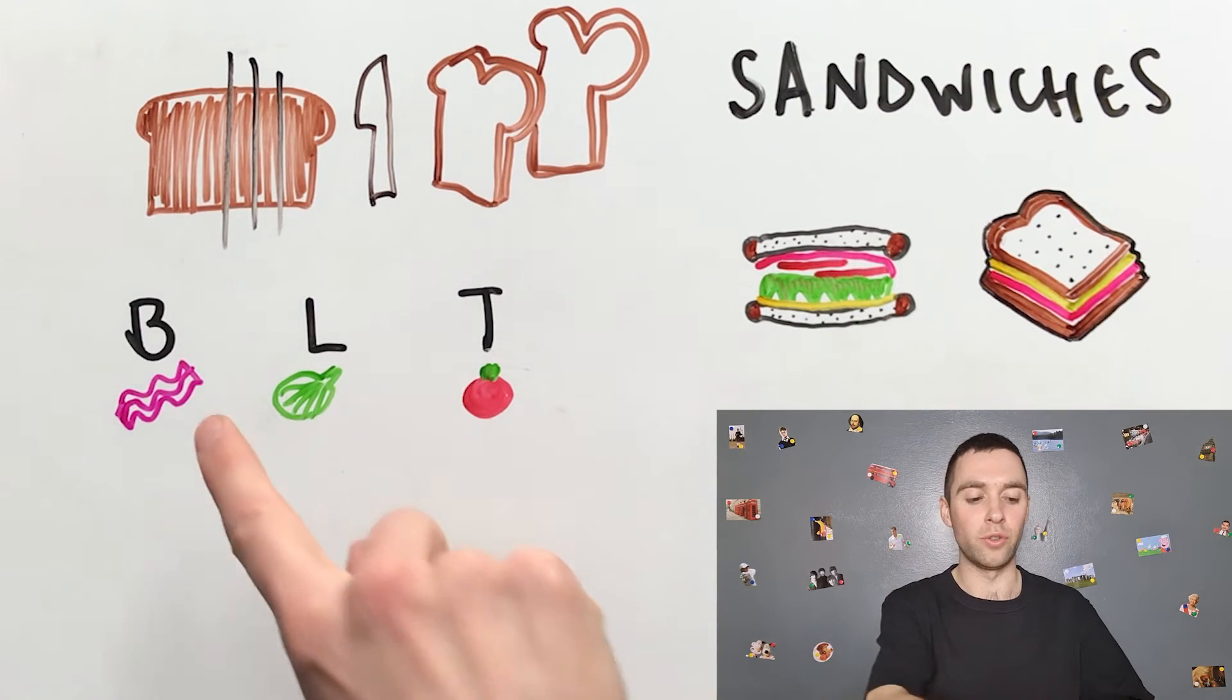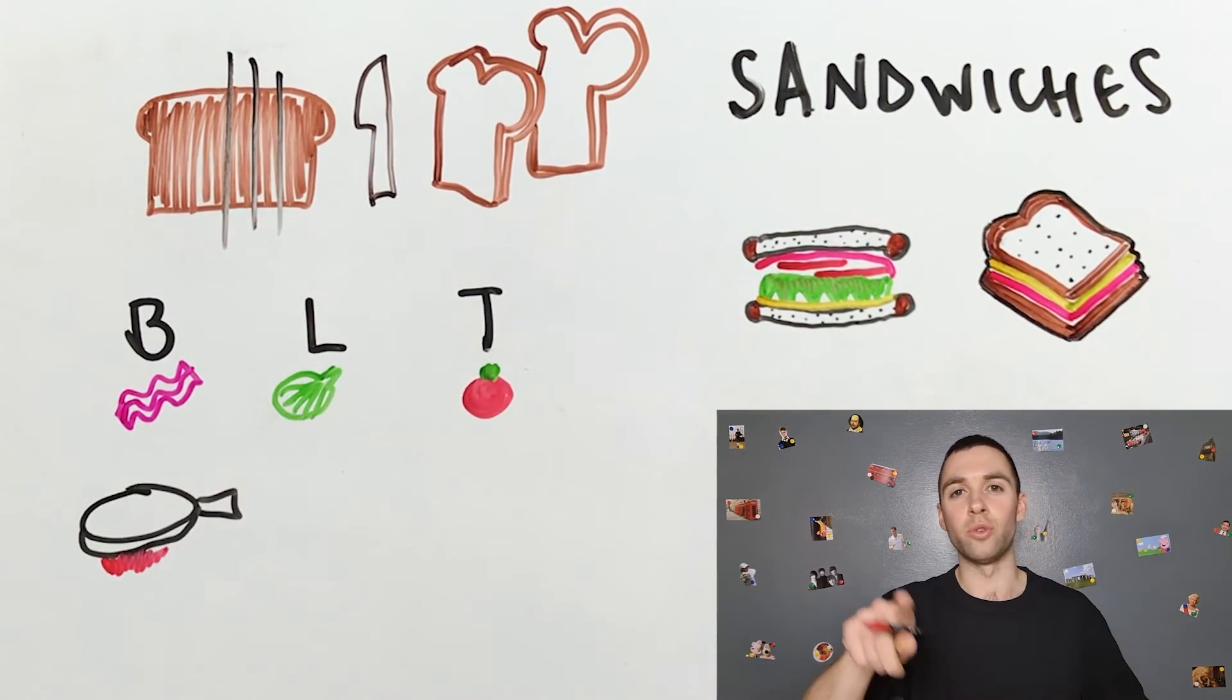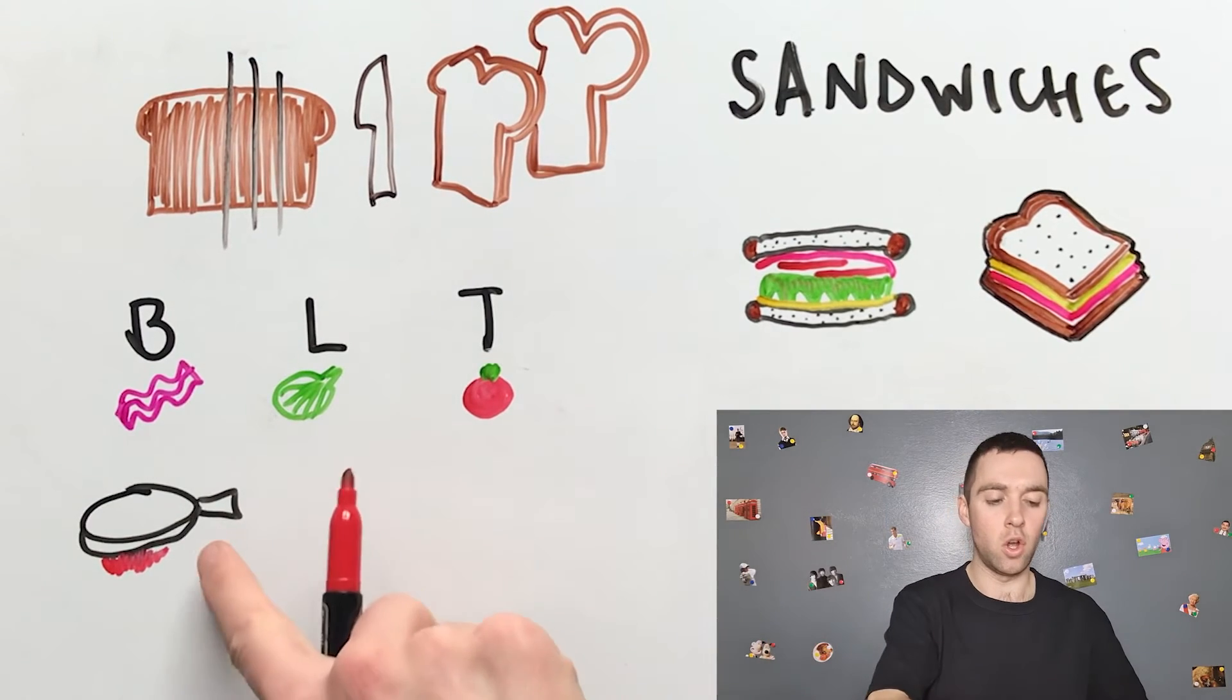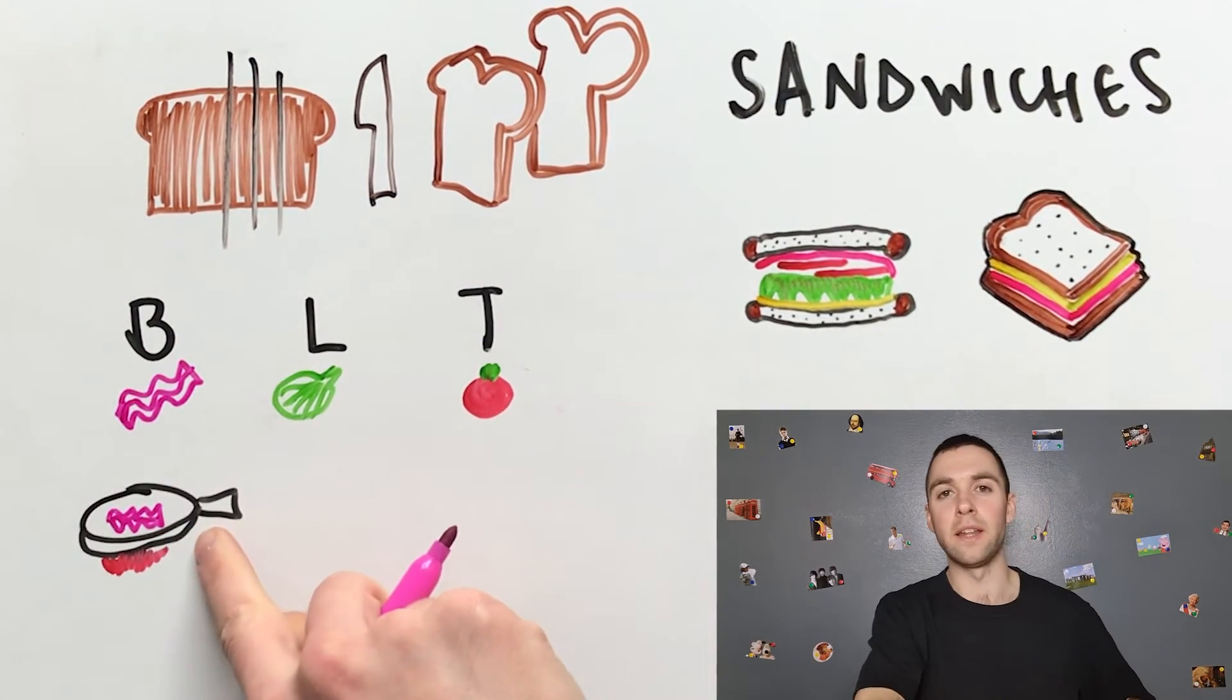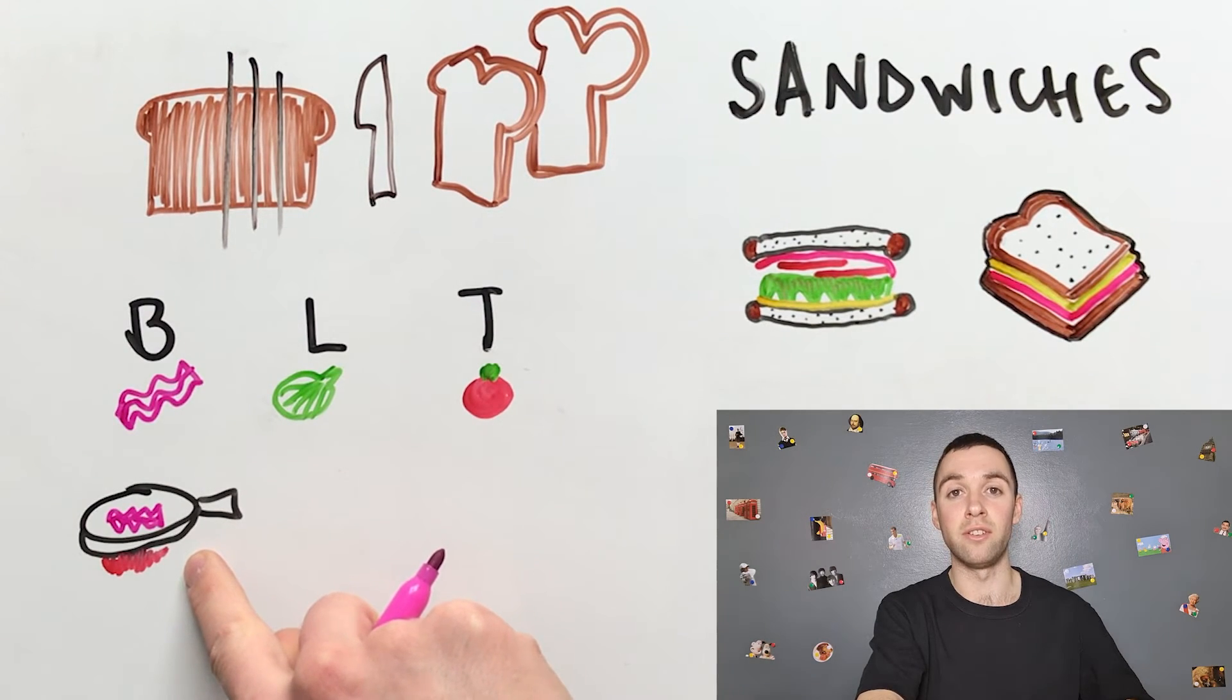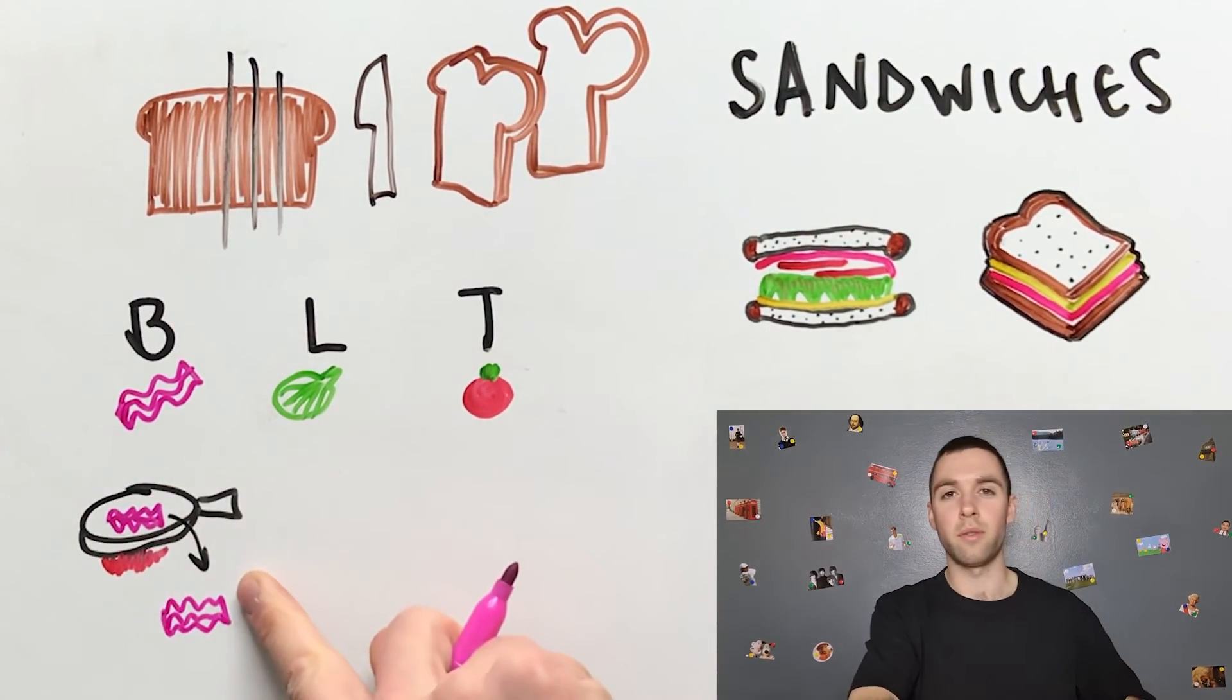First you need to cook or fry your bacon. So you need a really hot frying pan, and you put your bacon in like that, and it fries. It sizzles. When your bacon is ready, take it out. There.